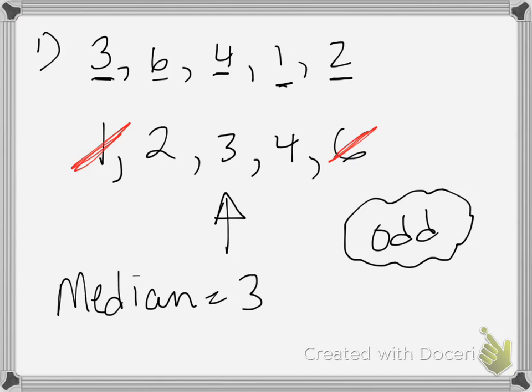Then I work inward: cross off the 2, cross off the 4, and I'm left with just the 3. That process of starting on the outside, crossing off your two outermost numbers, and working inward will always lead you to the median when the data set has an odd number of items.